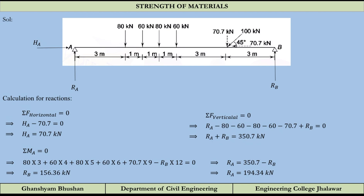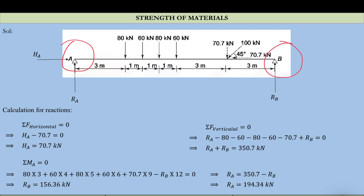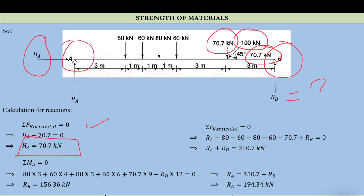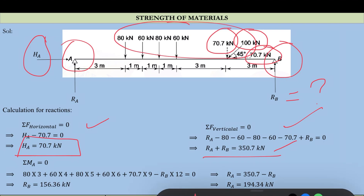In some problems you will not need the reactions, but mostly they are required. There are 3 unknowns because A is a hinge (giving HA and RA) and B is a roller (giving RB). The load is inclined at 45 degrees, so it has both horizontal and vertical components. The horizontal component balances HA, so from summation of horizontal forces = 0, HA = 70.7 kN. Summing all vertical forces gives RA + RB = 350.7 kN.